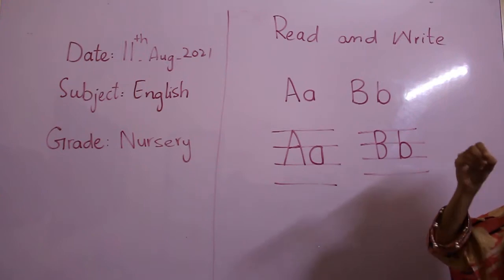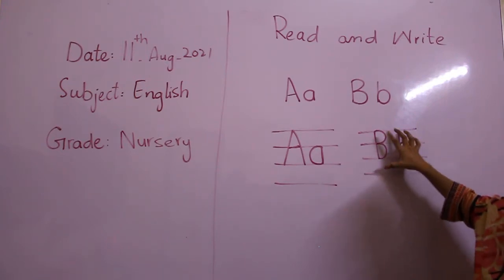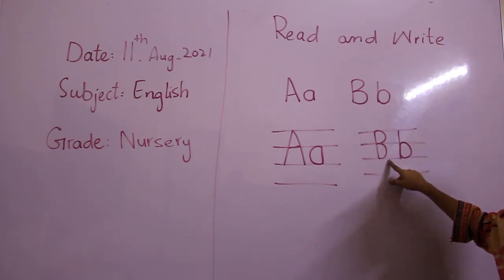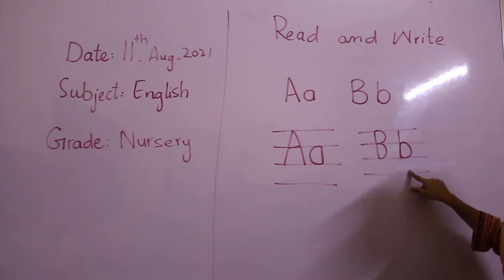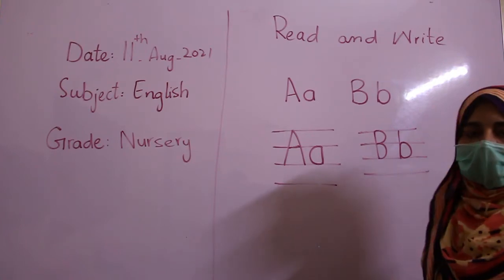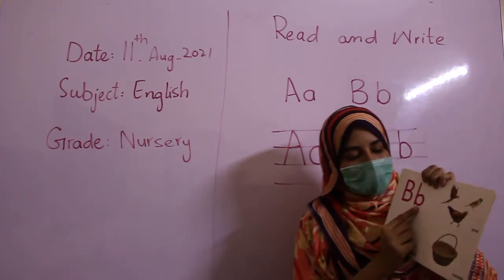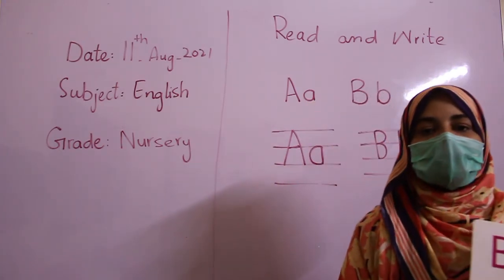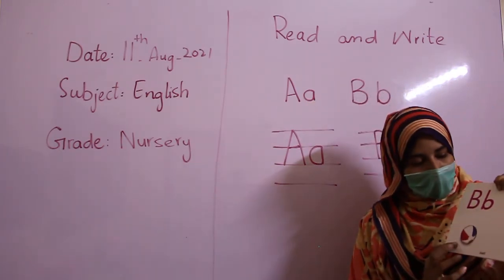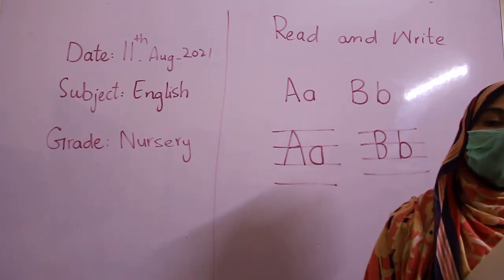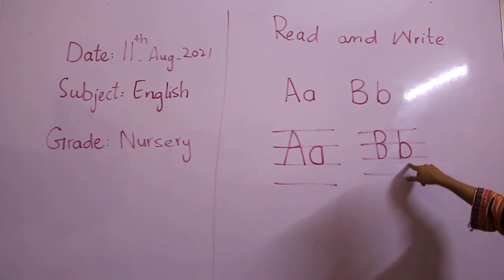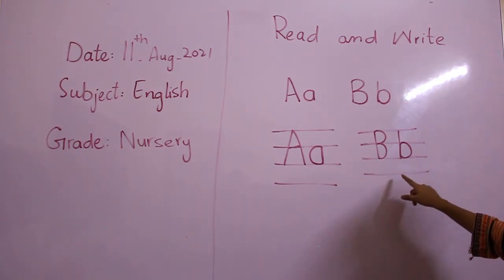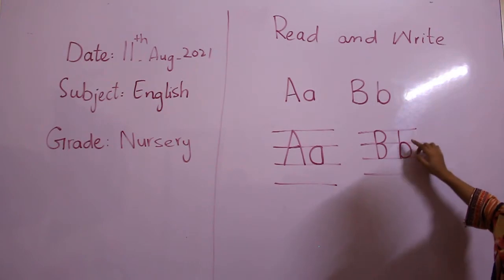We use three lines to write B — one, two, three. We have four lines but we use three lines to write B. Then here it is: B. We read it B. Purse, basket, ball — B. We write B in three lines.